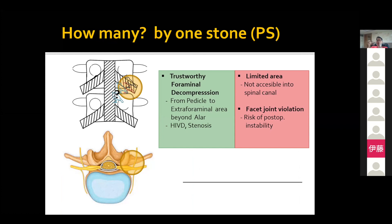The critical limitation of the paraspinal approach, as I mentioned, is the difficulty of accessing the spinal canal. In some cases at the upper lumbar level it is possible to manage pathology just lateral to the spinal canal, but at L4-5 and L5-S1 level it is not feasible. So I think the maximum number of pathologies addressable by the paraspinal approach in most cases is two or three.